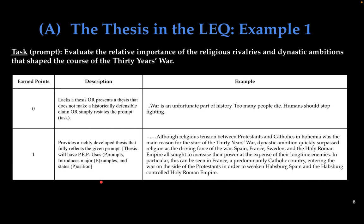Let's see examples of unacceptable and good thesis statements. Here is a thesis statement that would not earn the point: 'War is an unfortunate part of history. Too many people die. Humans should stop fighting.' That type of opinion is really not what we're looking for. We look at causes, effects, the whys and hows. Now let's look at a much more detailed thesis statement with examples, a position, a line of reasoning, and that is historically defensible: 'Although religious tension between Protestants and Catholics in Bohemia was the main reason for the start of the Thirty Years War, dynastic ambition quickly surpassed religion as the driving force of the war.' There's the counterargument, and then I show I'm taking a position.